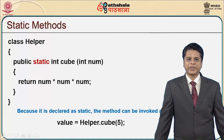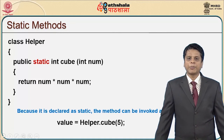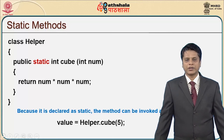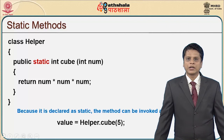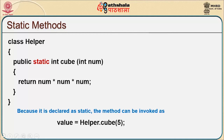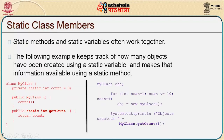For example, a Helper class defines: public static int cube(int number) { return number * number * number; }. Because it is declared static, the method can be invoked as: value = Helper.cube(5). Static methods and static variables often work together. The following example keeps track of how many objects have been created using a static variable and makes that information available using a static method.